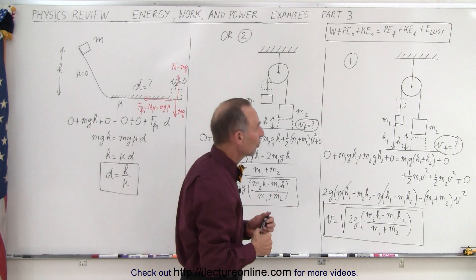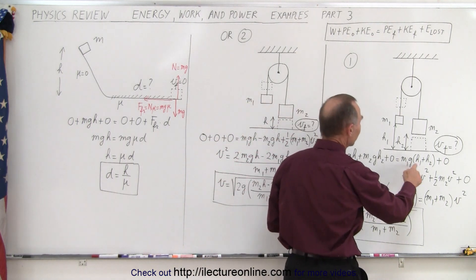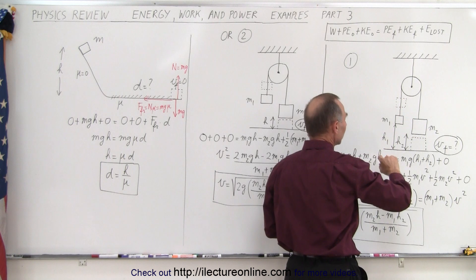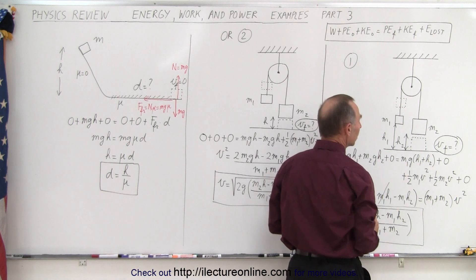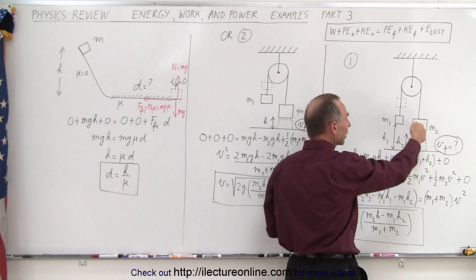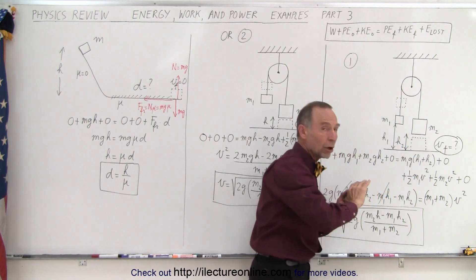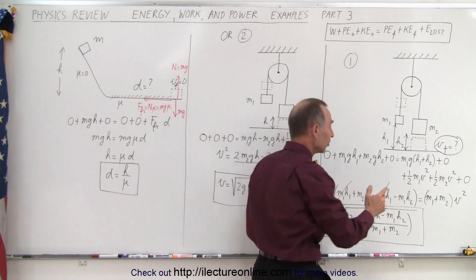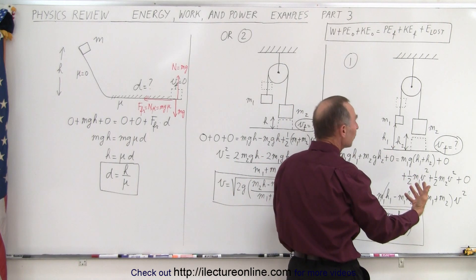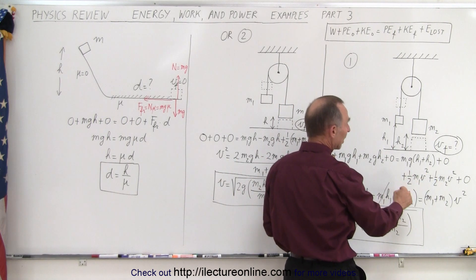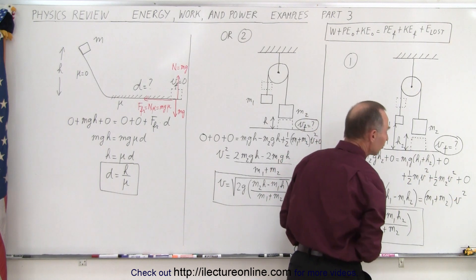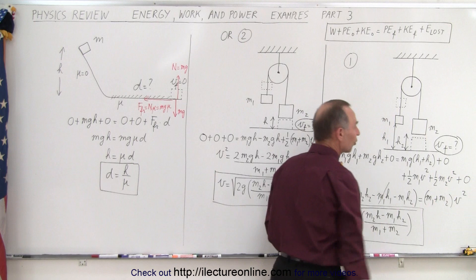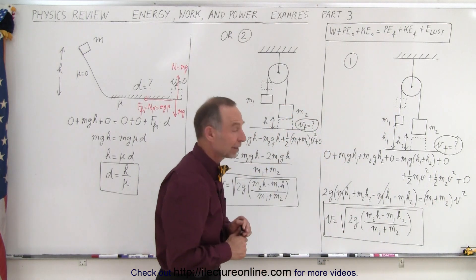At the end, block one has now gained an additional h2 in height, so it'll be m1gh1 plus h2. The final block is now on the floor so there's no longer any potential energy, so that part is zero. Now they're both moving at velocity v, so they both have kinetic energy: one half m1v squared plus one half m2v squared, and no energy loss due to friction or wind resistance.